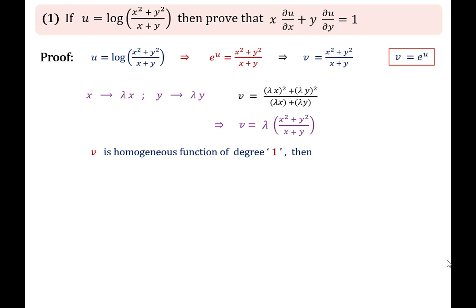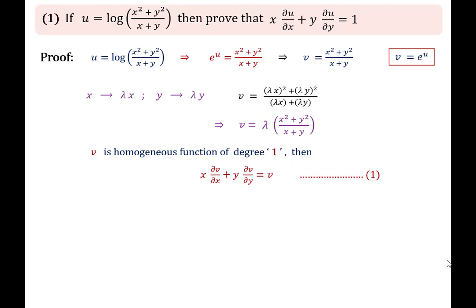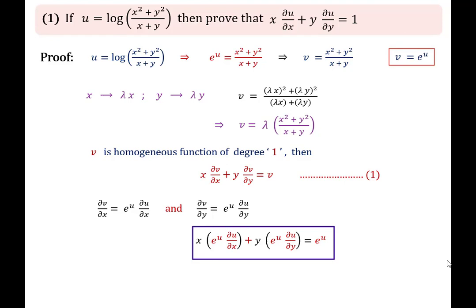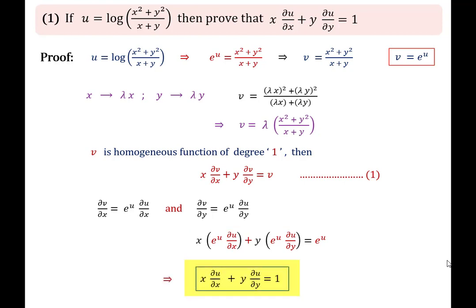By Euler's theorem, X (∂V/∂X) + Y (∂V/∂Y) = V. Differentiating V partially with respect to X and Y and substituting these values, we get X e^U (∂U/∂X) + Y e^U (∂U/∂Y) = e^U. Dividing by e^U, we obtain X (∂U/∂X) + Y (∂U/∂Y) = 1.